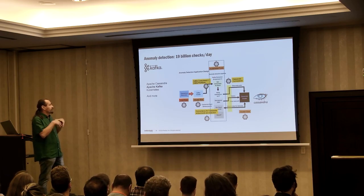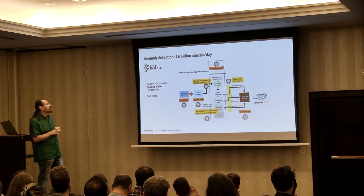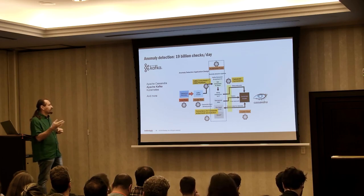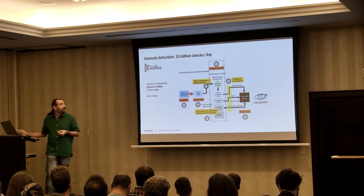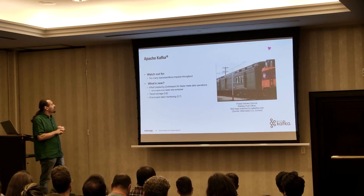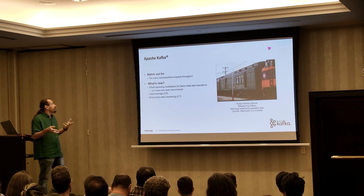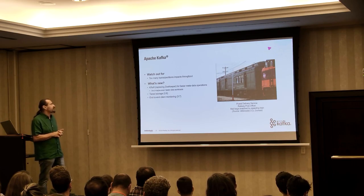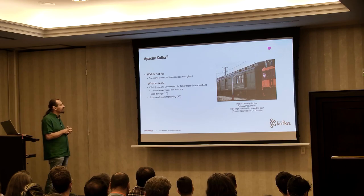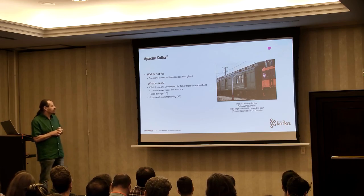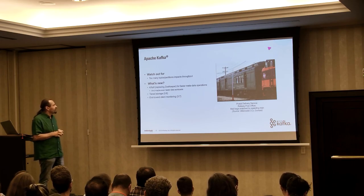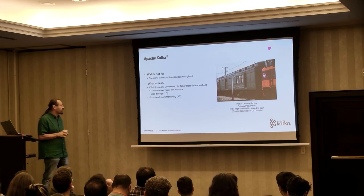Kafka was the part that ran the anomaly detection pipeline as a Kafka client, using Cassandra for persistence. Things to watch out for: too many topics and partitions can impact throughput. What's new: KRaft is replacing ZooKeeper in current versions, giving faster metadata operations and potentially faster data workloads. Tiered storage is coming, and end-to-end client monitoring is coming in 3.7.